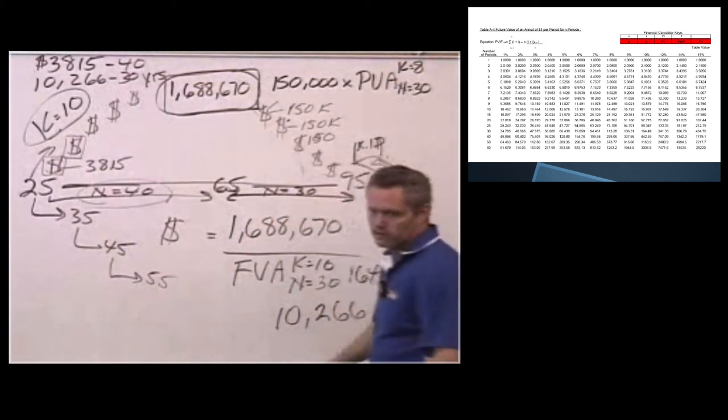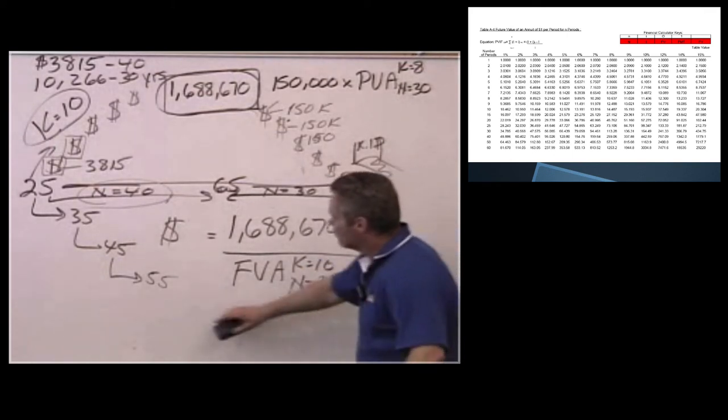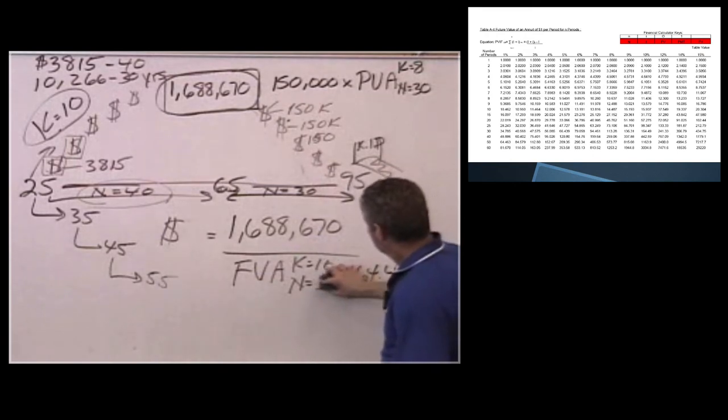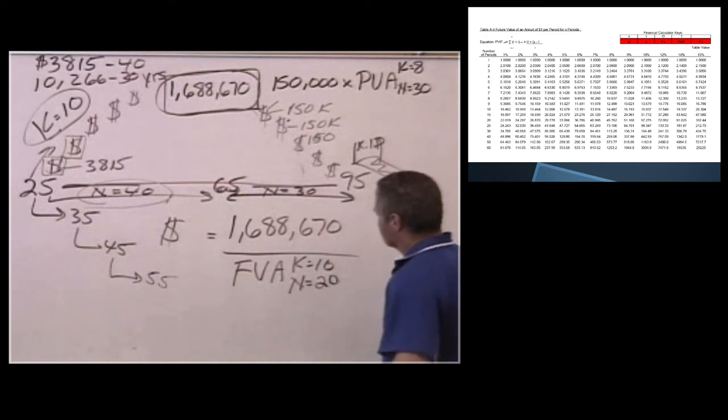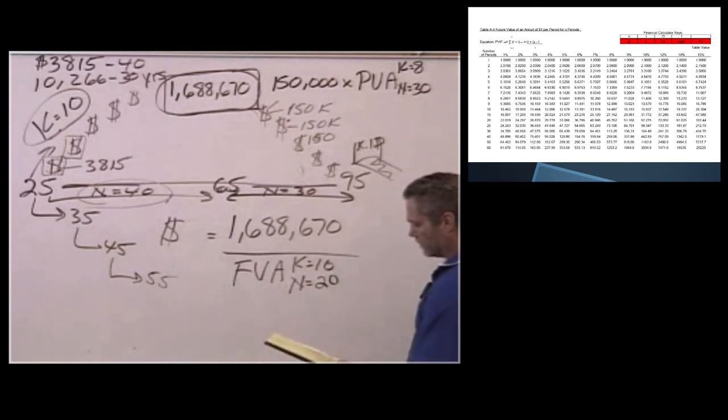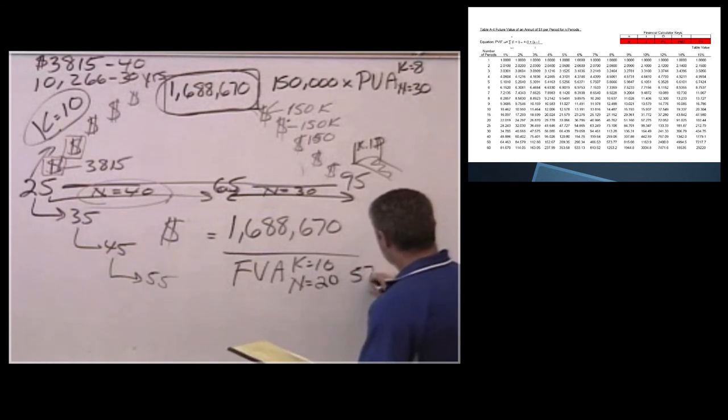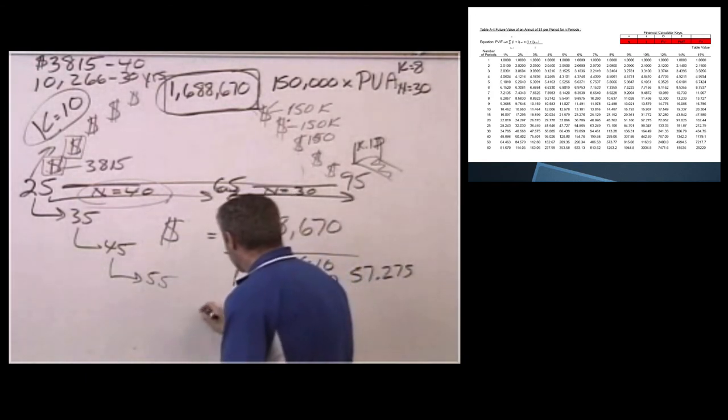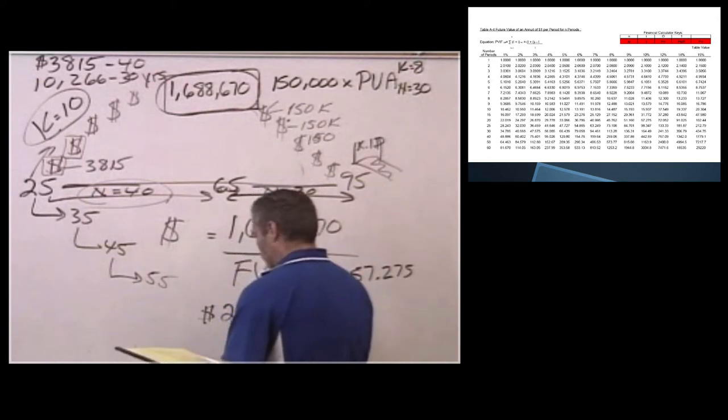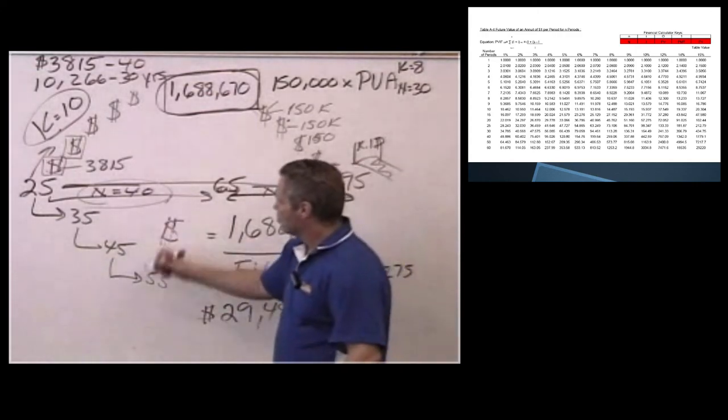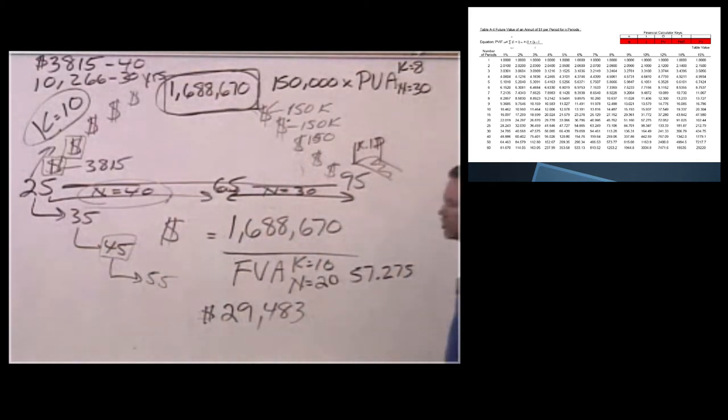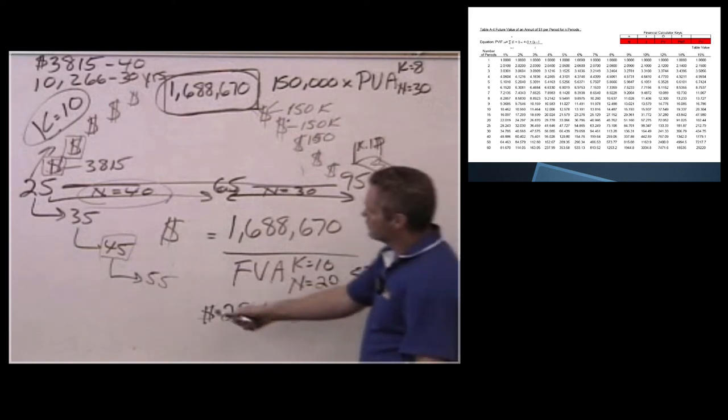And it gets worse, much worse. So if I start at 45, then my N is only going to be 20. So I look up my factor. And my factor for 20 years is 57.275. I divide that in and I need to save each year $29,483. We have pretty much waited to the point here at 45, it's almost undoable. I've got to save about $2,500 per month to pull this thing off.